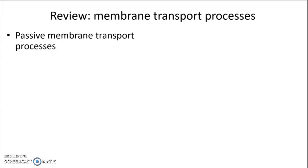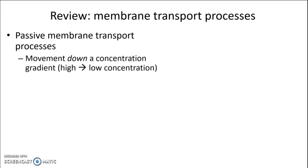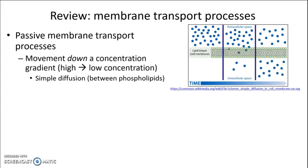We started with passive membrane transport processes, which are movement down a concentration gradient from where something is in high concentration to where it's at low concentration. The first method we looked at was simple diffusion, which is when molecules can simply wiggle their way between phospholipids to get across a membrane. This only works for small nonpolar molecules that can interact easily with the hydrophobic tails of the phospholipids in the membrane.